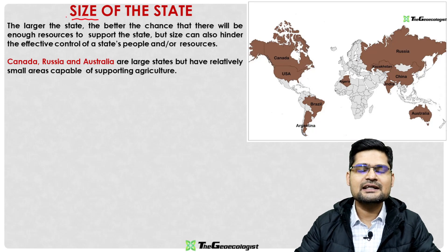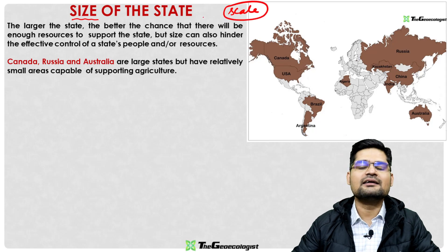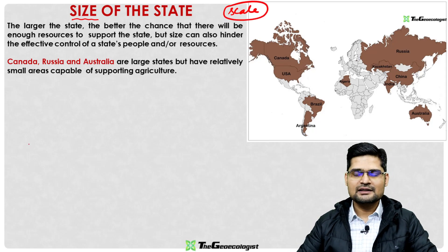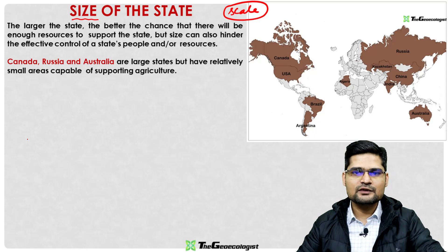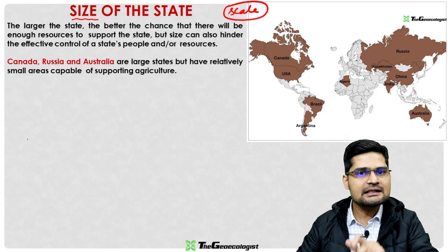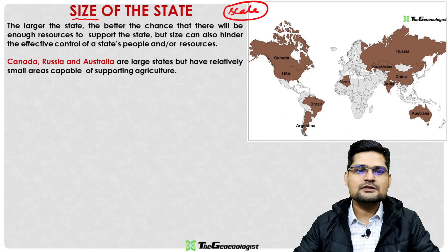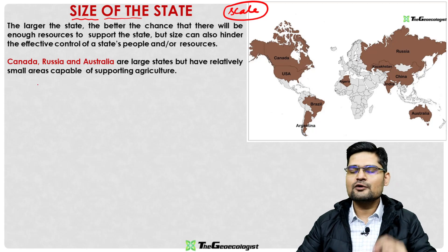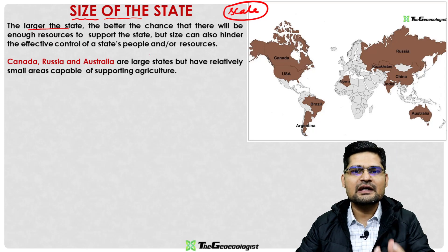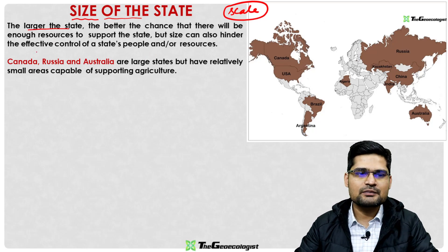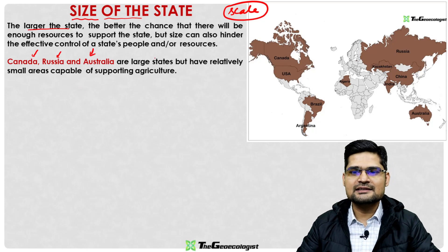When we talk about size of a state, it involves a scale factor in geography — whether we are looking at a macro level, a world level, a country level, or a state level. Size of a state refers to how large or small it is in terms of area or territory. For example, Canada, Russia, and Australia are very large states.